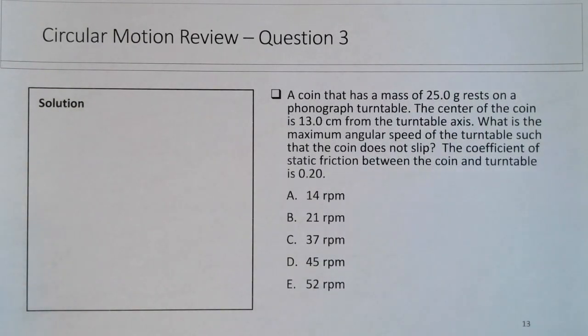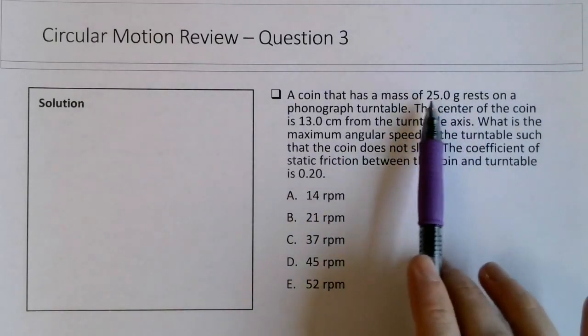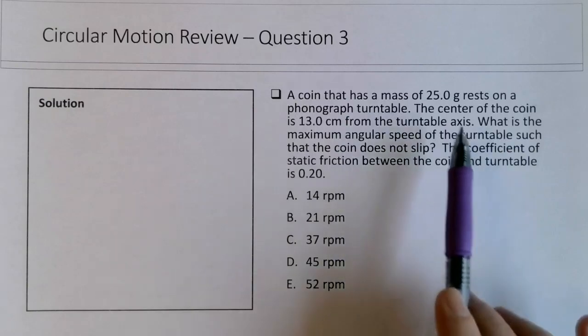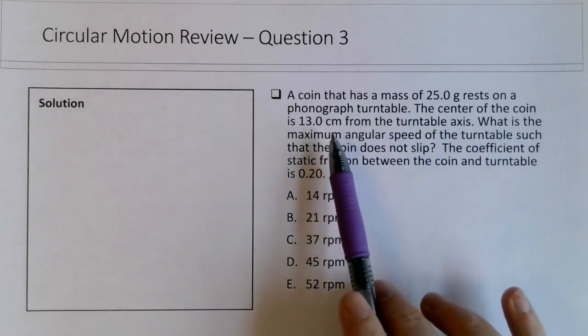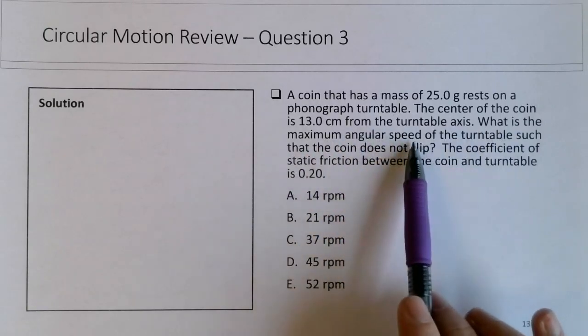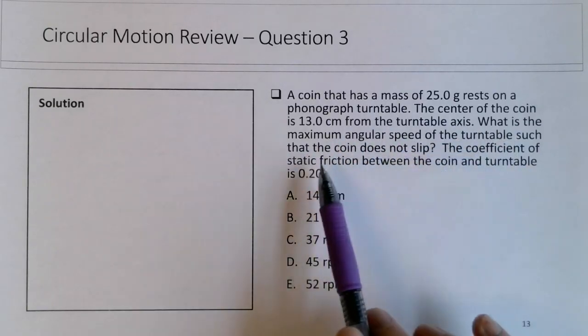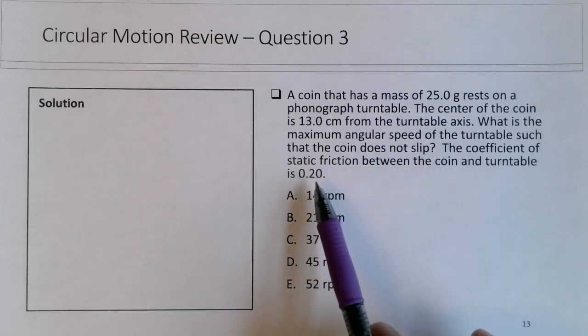Okay, so in this third circular motion review question, the coin sitting on a phonograph turntable, that's kind of like a record player, it's a 25 gram coin, which actually is not going to end up mattering. It's 13 centimeters from the turntable axis. What's the maximum angular speed of the turntable such that the coin does not slip? The coefficient of static friction between the coin and the turntable is 0.2.